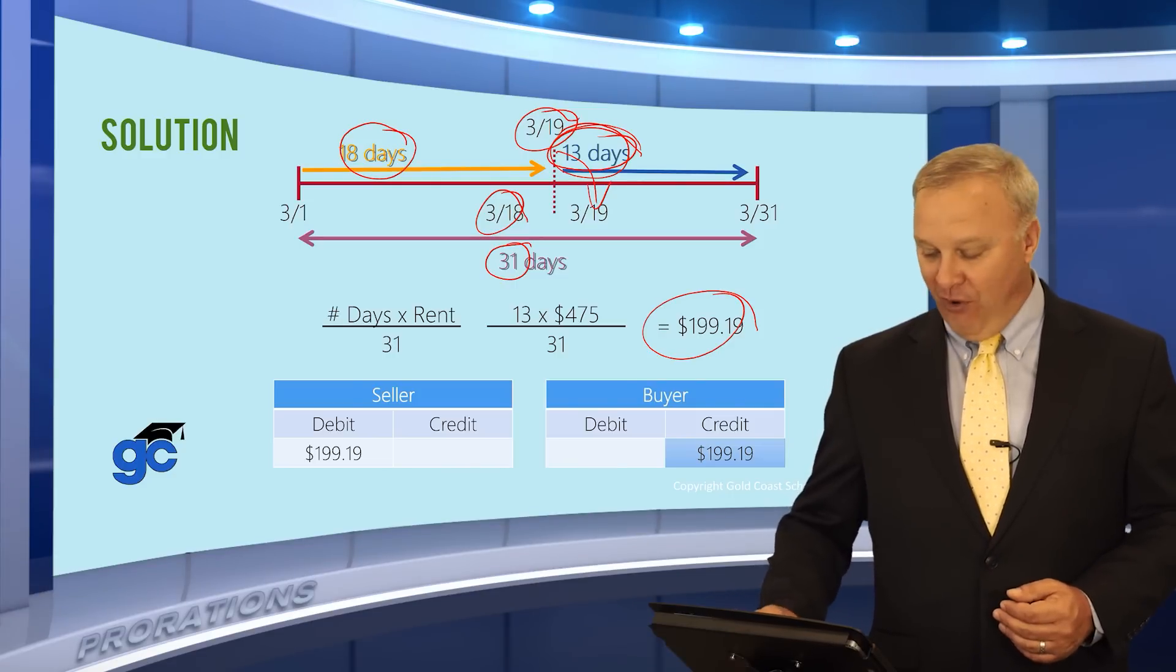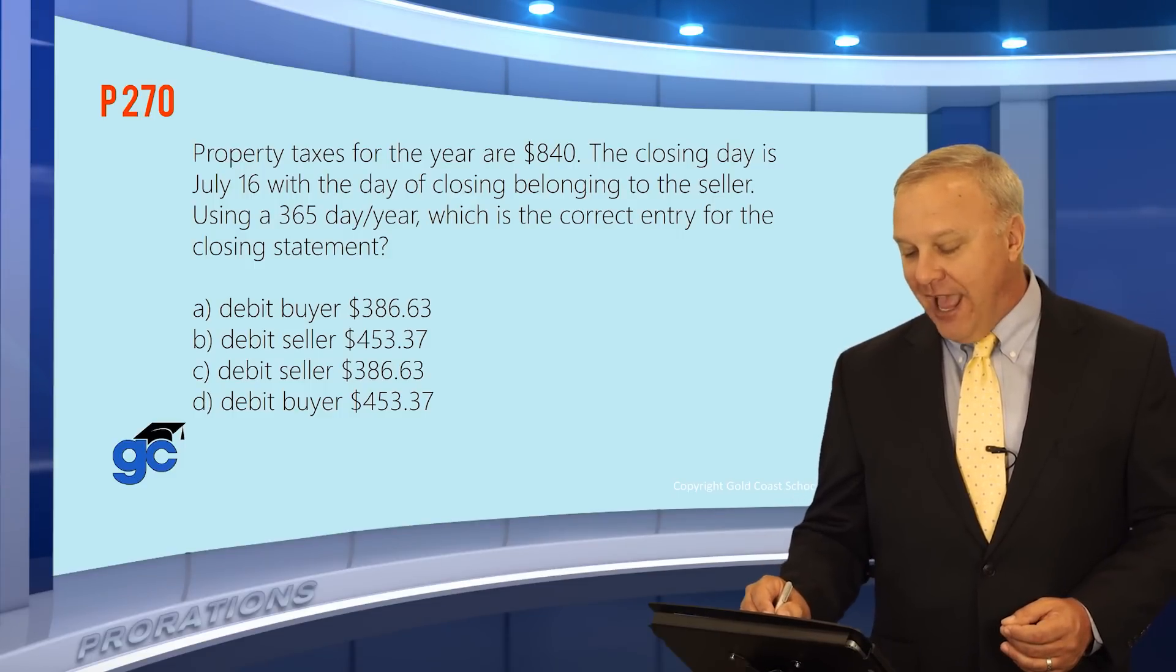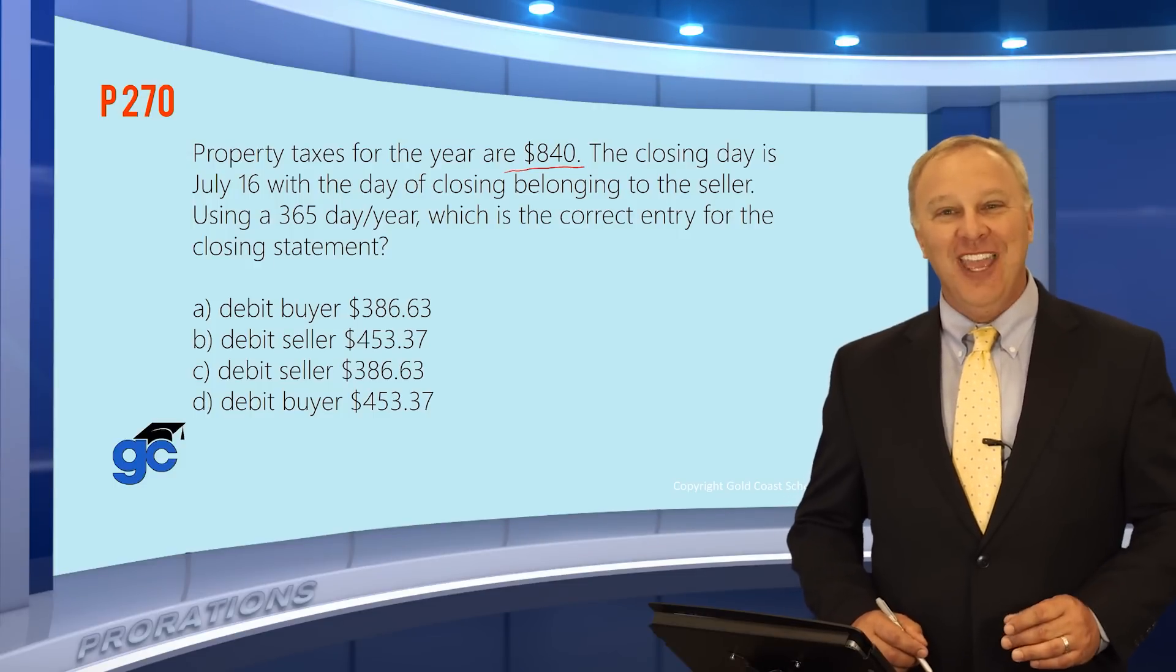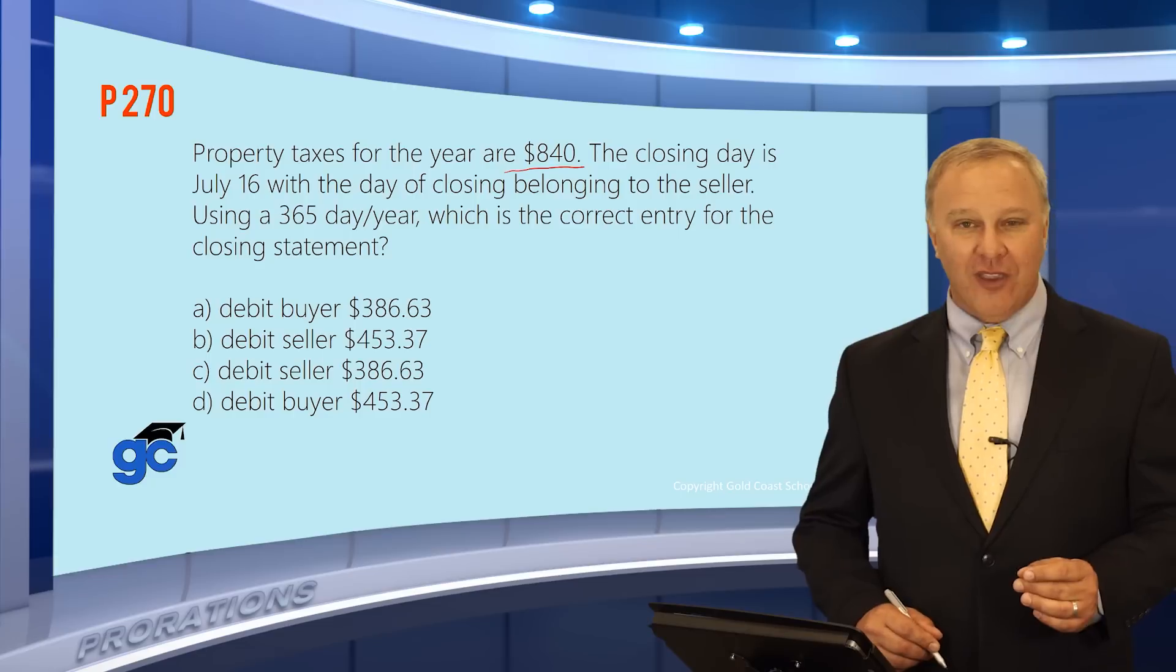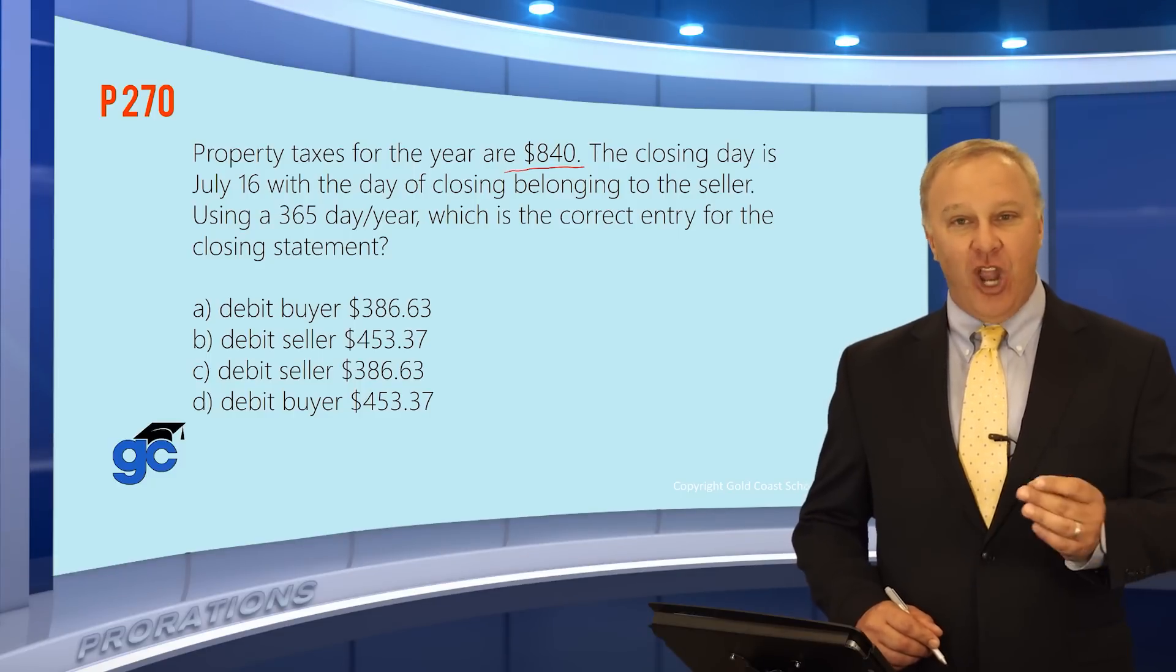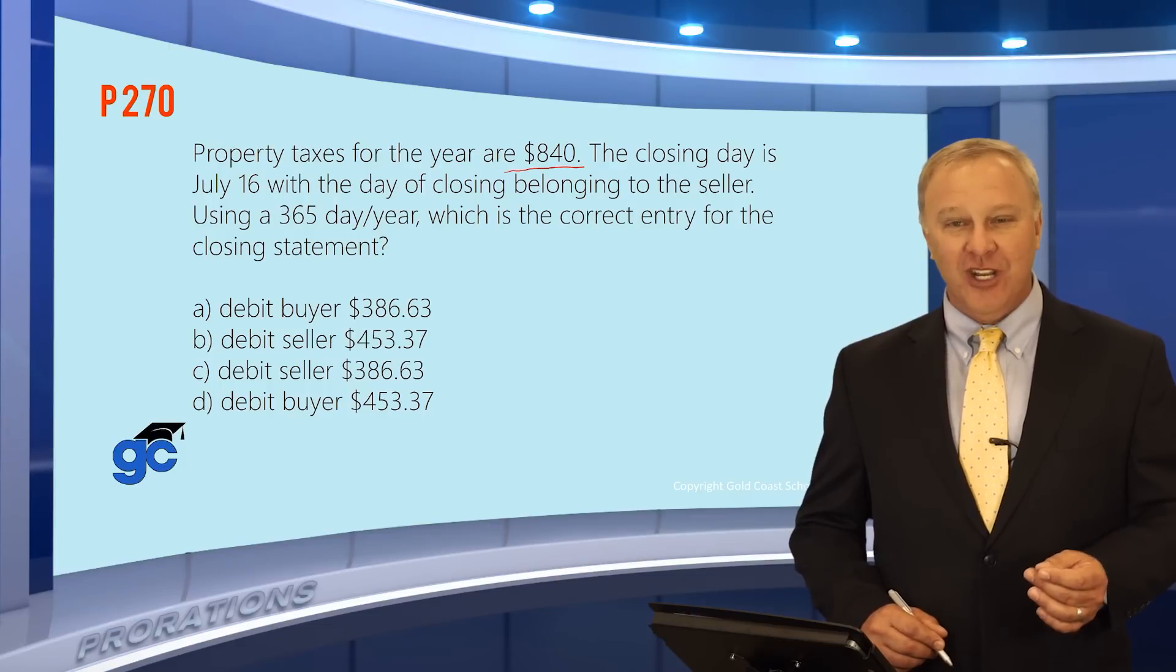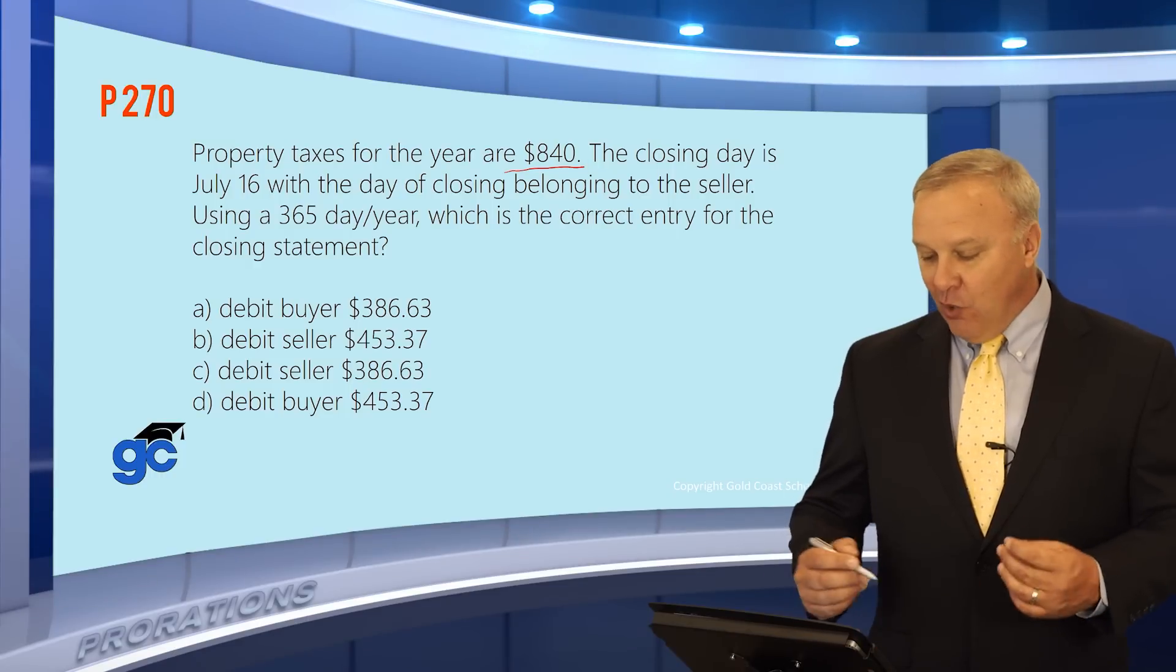Let's do one more proration. This one says property taxes for the year are $840. Now, as soon as you see property taxes, you should be thinking a couple things. Number one, property taxes are not paid in advance like the rent was. Property taxes are paid in arrears. Also, whereas the rent was based on one month in the previous question, property taxes are based on the entire calendar year.